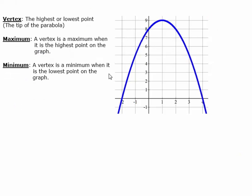Now that you know the basic shape of a parabola, we're going to take a look at the vocabulary. The vertex of a parabola is either the highest point or the lowest point on that U shape. You'll notice that the parabola has a highest point right here — that will be the vertex. You always write the vertex as a point, so this one is (1, 9). In this case our vertex is the highest point on the graph, so it's going to be called a maximum.